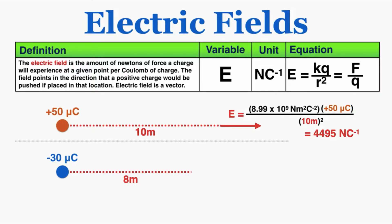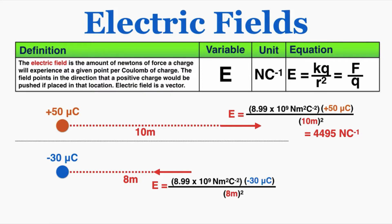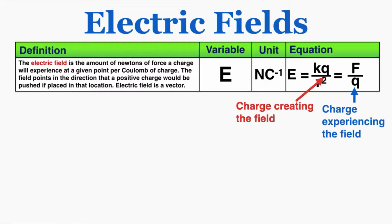Here we have a negative 30 micro coulomb charge, measuring the field strength at 8 meters. Because a positive charge would be attracted to the negative charge, and the field points in the direction a positive charge would be pushed, the field points toward the negative charge. Plugging in the numbers gives the field strength there. Notice the distinction: the first Q in the first equation is the charge creating the field, and the second Q in the second equation is the charge experiencing the field — that's a really important distinction as we move forward.